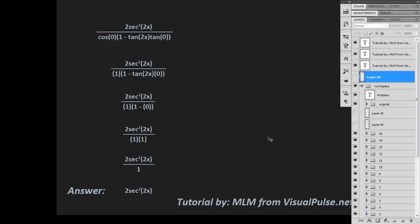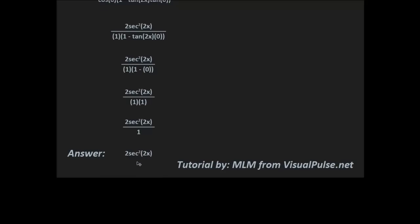So our final answer is 2 secant squared of 2x. Hope you liked it — that's about it, see ya.